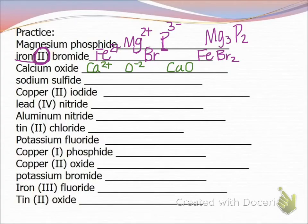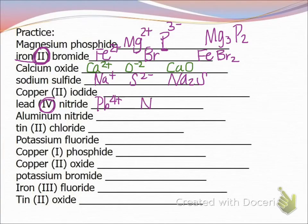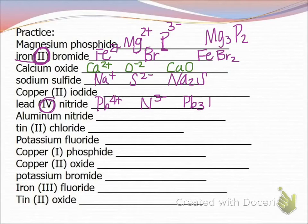Sodium sulfide: sodium is a group 1 metal, so it's +1. Sulfide is 2−. I need two sodiums to balance sulfide, giving Na₂S. Lead(IV) nitride: lead(IV) means lead is +4. Nitride is in group 15 with a 3− charge. The common multiple of four and three is twelve, so I need three lead and four nitrogen: Pb₃N₄.